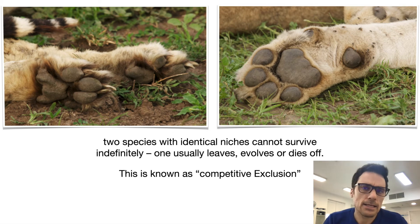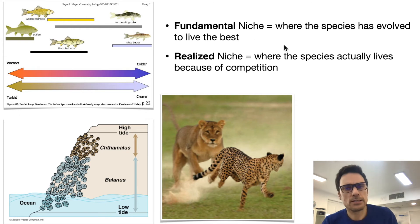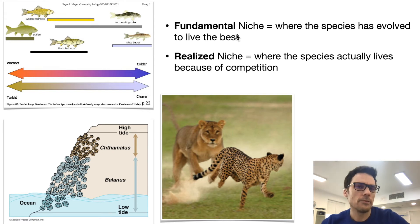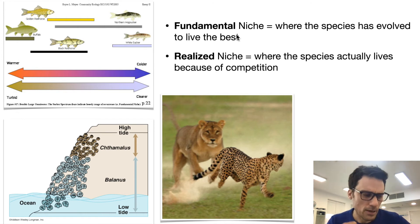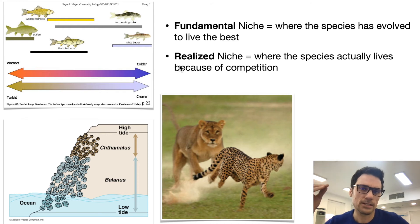One last thing about the niche concept is the idea of what you can in real terms use versus what you actually do use. Fundamentally, a human can exist anywhere on this planet — from the North Pole to the South Pole to the equator. The reality is our bodies tend to do better at certain temperatures, and we tend to live more along the coastlines than up at high altitudes.